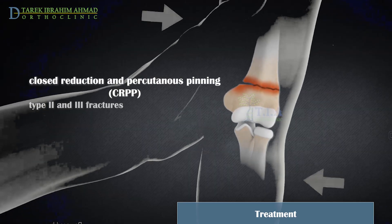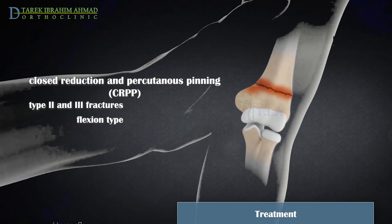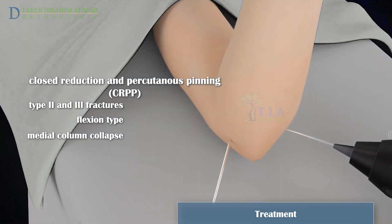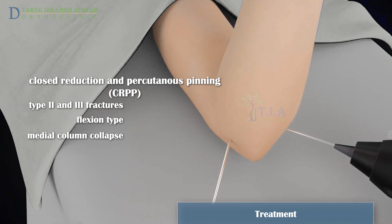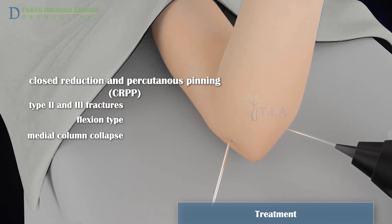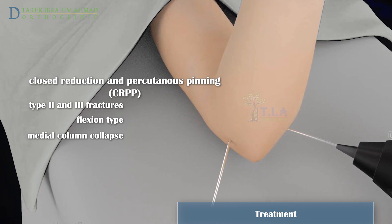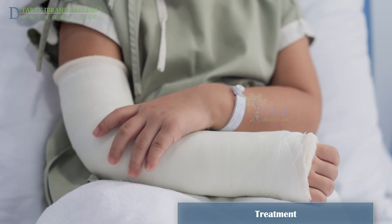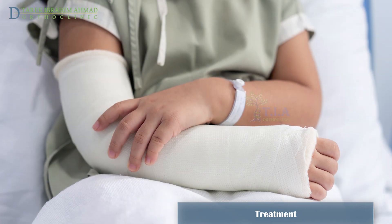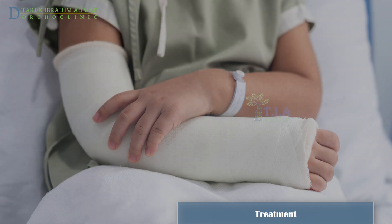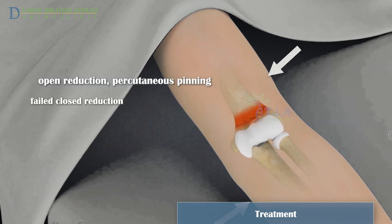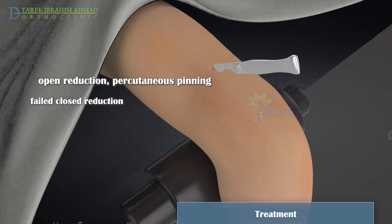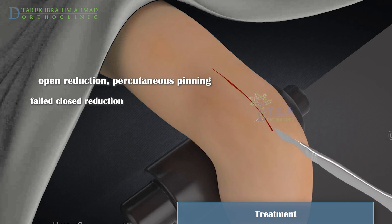Type 2 fractures require orthopedic closed reduction and percutaneous pin fixation. During surgery, thin pins may be put into the end of the humerus to keep the bone from moving until it heals — a procedure called closed reduction and percutaneous pinning, where percutaneous means through the skin. A posterior splint is applied for the first week and then replaced by a cast.